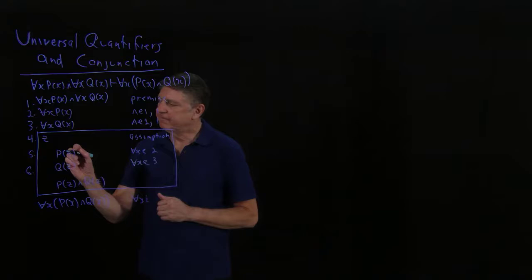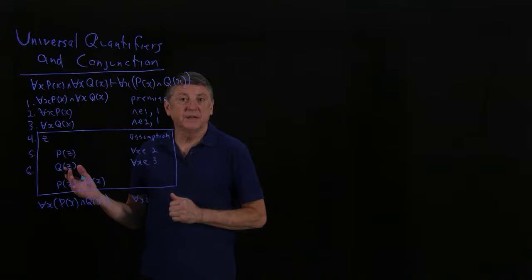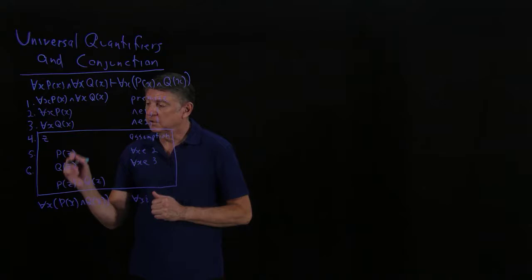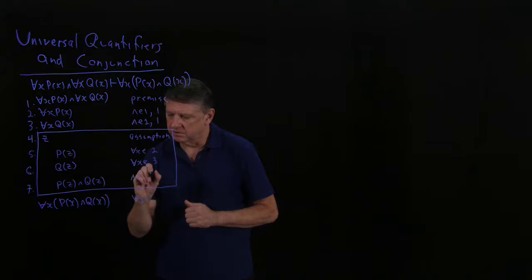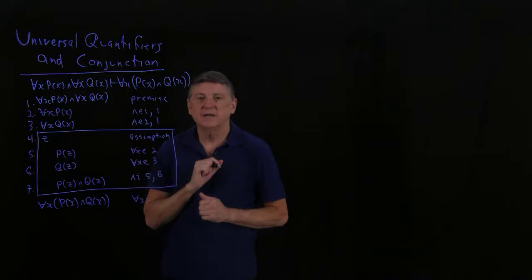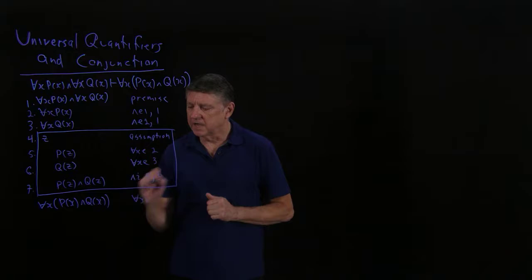If I have P, I have Q on separate lines, then from propositional logic, conjunction introduction allows me to conjoin them. And so that conjunction can be justified by conjunction introduction based on line 5 as the left conjunct and line 6 as the right conjunct. I've now completed the box.